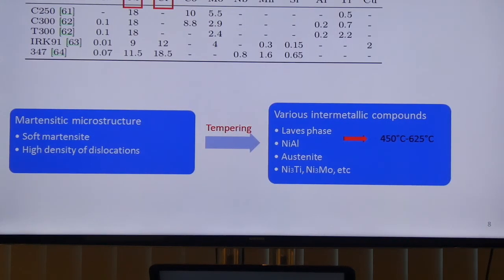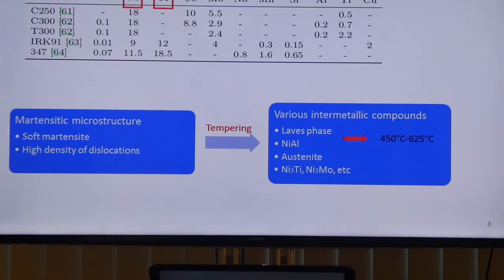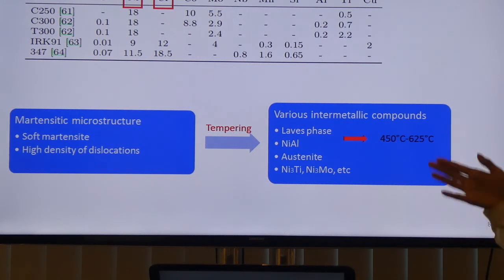The second material is maraging steel. The name 'maraging' comes from martensite and aging. This alloy is highly enriched with nickel and chromium, and also other elements. On cooling, the austenite transforms into a very soft martensite with high dislocation density. Intermetallic compounds then precipitate out during tempering — including Laves phase, nickel-aluminium, austenite, nickel-titanium and others.